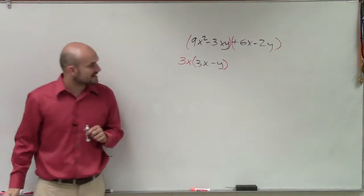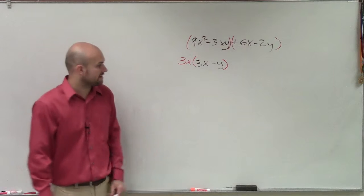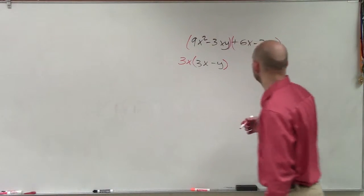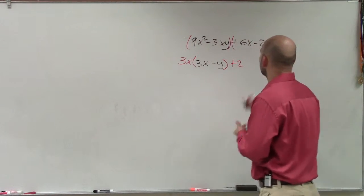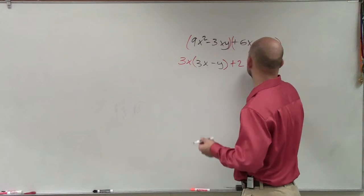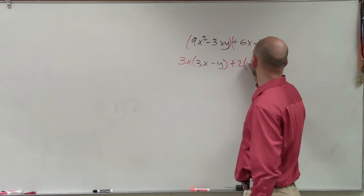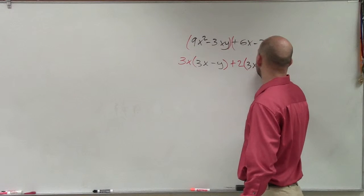Then we look at 6x minus 2y and say, what can we factor out there? Well, we can factor out a positive 2. And by factoring out a positive 2, we're left with 3x minus y.